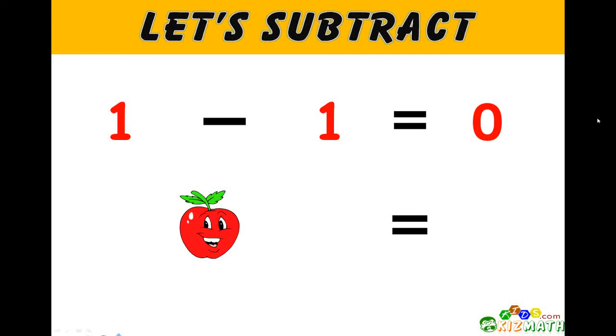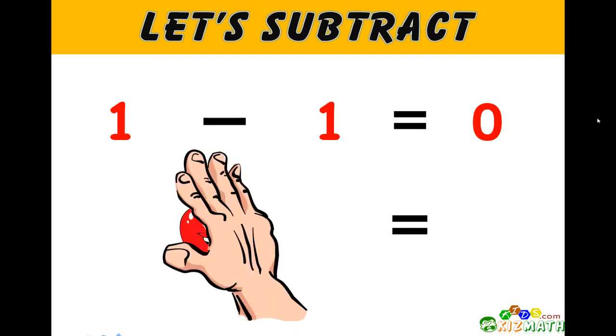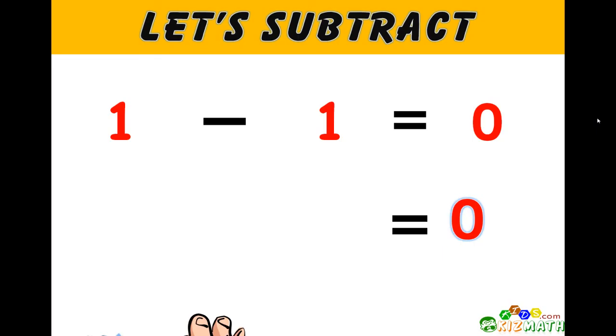Let's subtract! 1 minus 1 equals 0. If we have one apple and we take away that one apple, we have zero apples left.